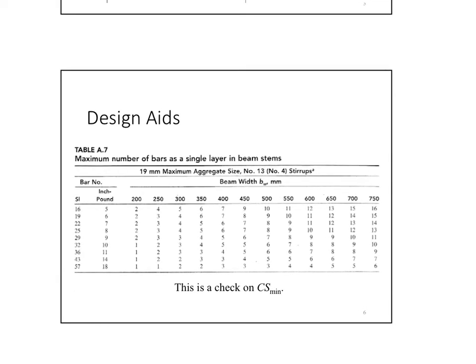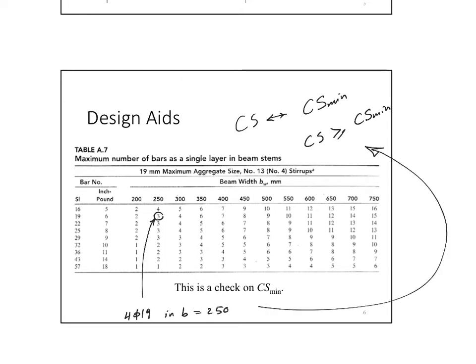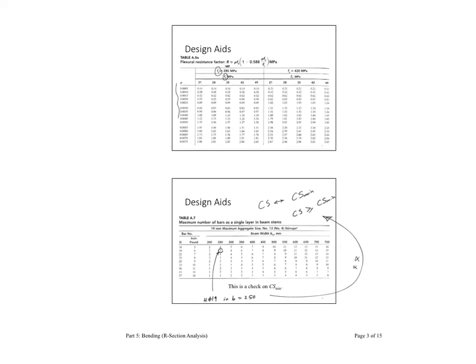And then the next one is maximum number. This is the CS minimum check. So we're checking CS. Again, it's CS minimum. If you go beyond this, for example, if I go instead of three bars of number 19 and a 250 millimeters, that means my CS will be smaller than my CS minimum. So this is very important to try to understand why I'm using this table. It's because I always want to make sure that my CS is bigger than or equal to CS minimum. If I picked up more than this number, if I placed 4, 5, 19, and a B equals 250, then I violated this. This will not work.